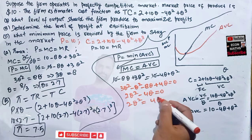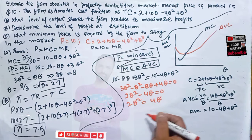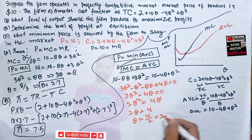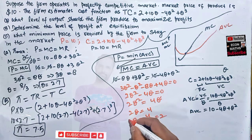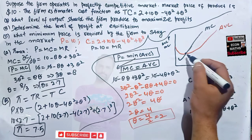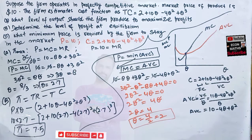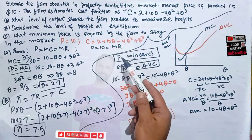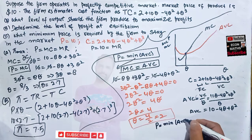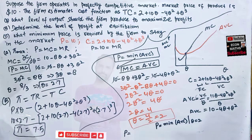Setting MC equal to AVC: 10 minus 8Q plus 3Q squared equals 10 minus 4Q plus Q squared. The 10s cancel, and simplifying we get 2Q squared minus 4Q equals 0, so 2Q equals 4, giving Q equals 2. The minimum of AVC occurs at Q equals 2.